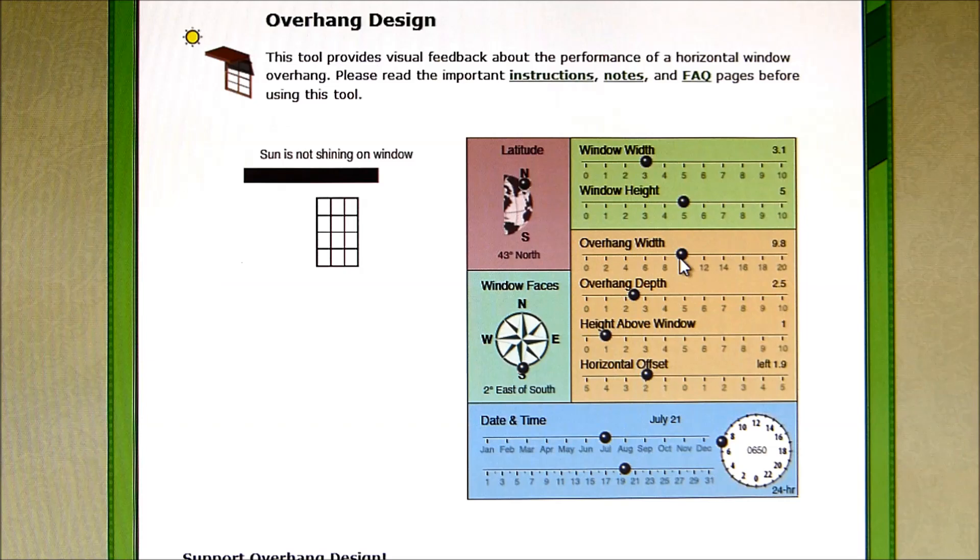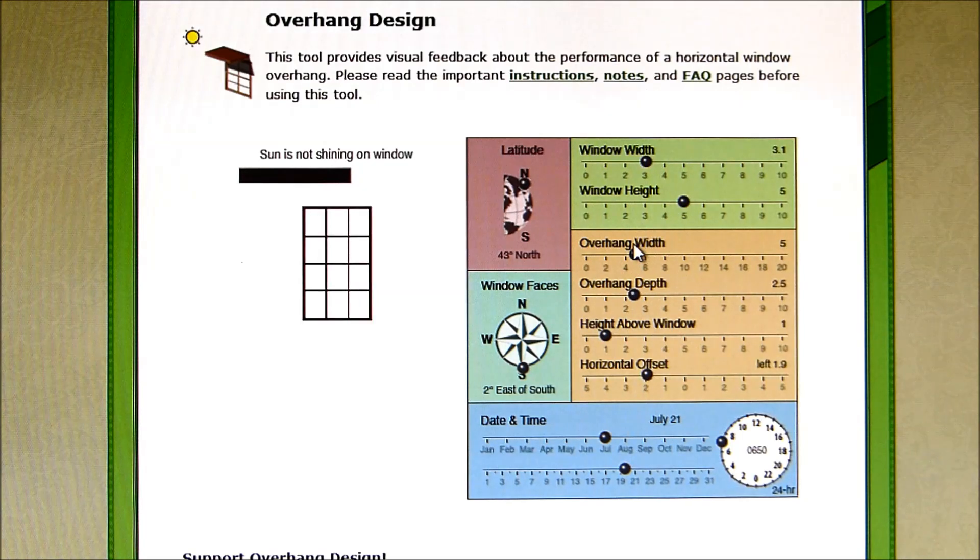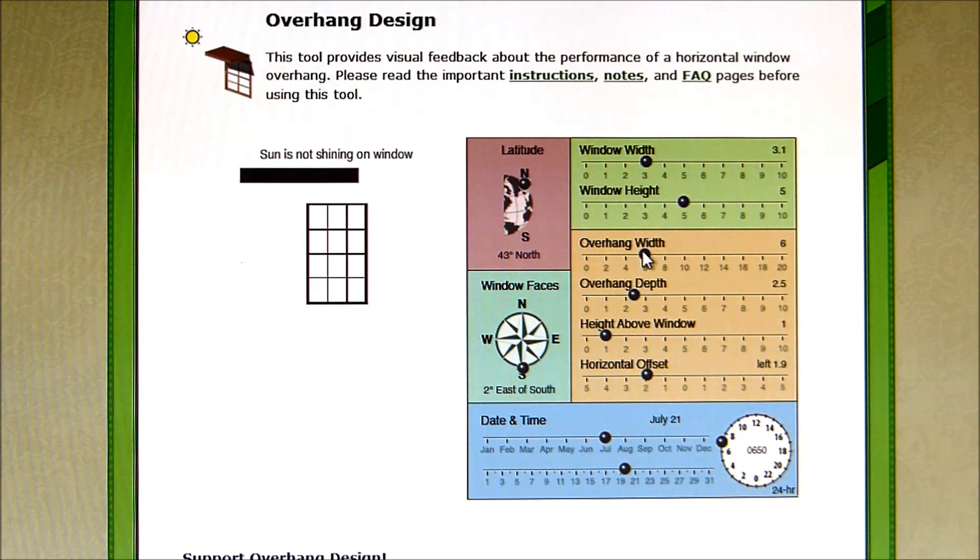For overhang width, as we slide that, you can see that the overhang changes in width. Not really important if you're dealing with something that's completely on a wall, but if it's on the corner then you might want to consider where that corner is going to fall on the window.